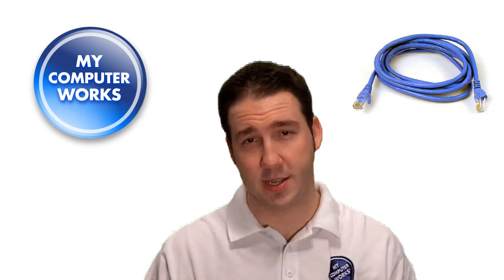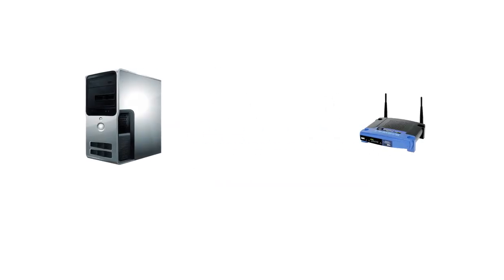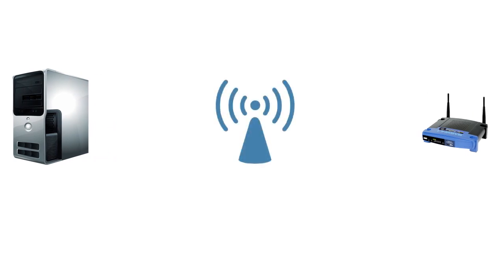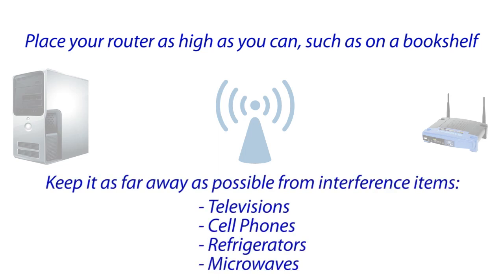I would recommend connecting your computer to your router through a wired connection with one of these. It's called an Ethernet cable, or Cat5 cable, and it looks like an oversized telephone cable. However, if your computer is not located close to your router and you choose to use wireless connectivity, make sure to place your router as high as you can, such as on a bookshelf, and keep it as far away as possible from interference items like televisions, cell phones, refrigerators, and microwaves.